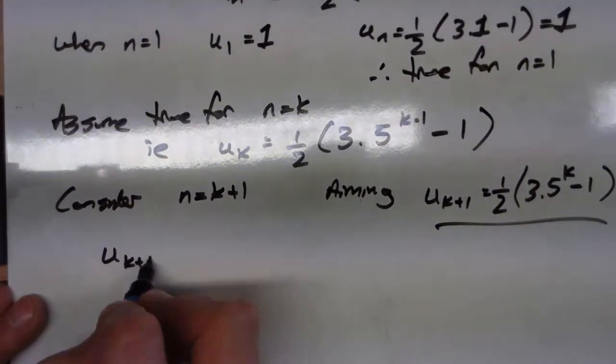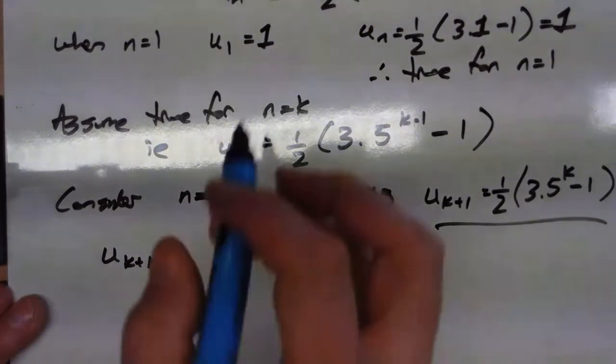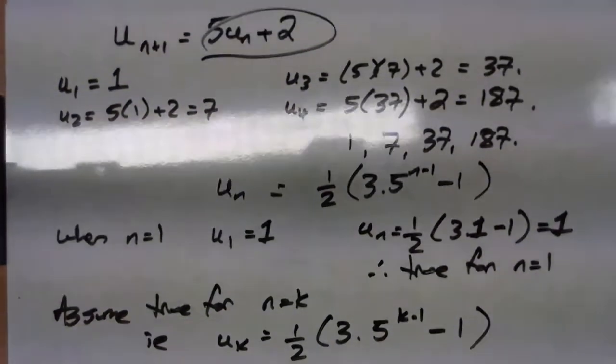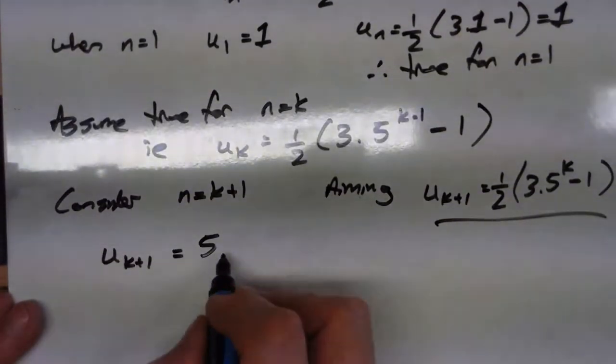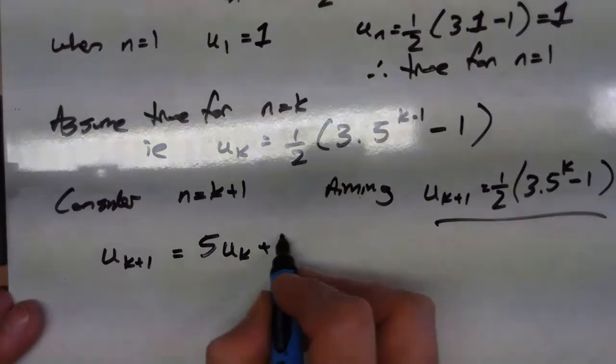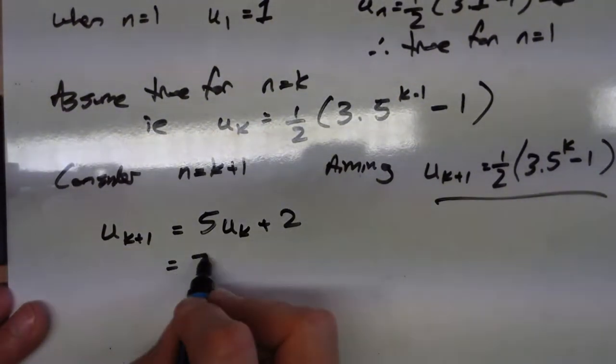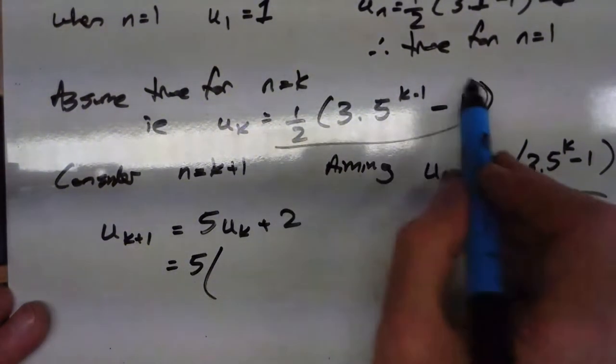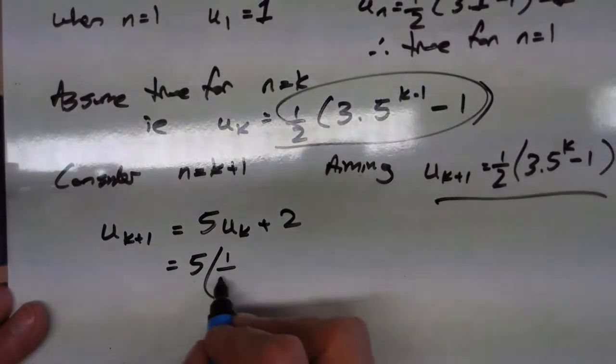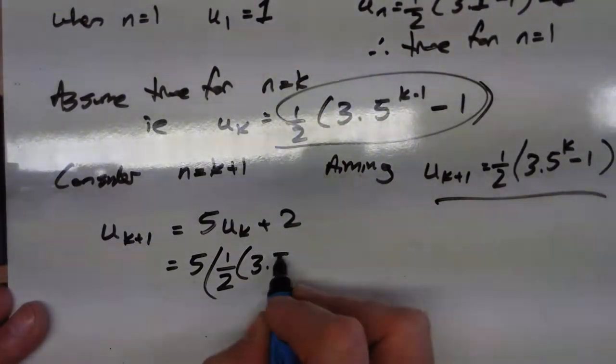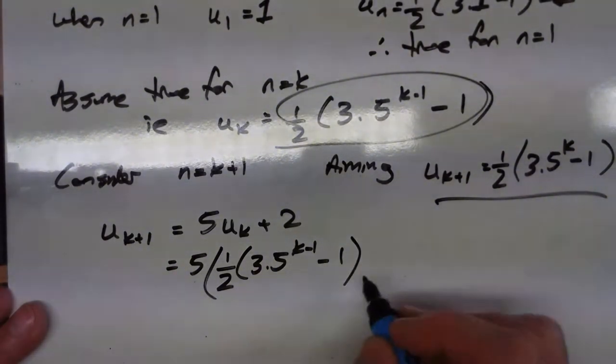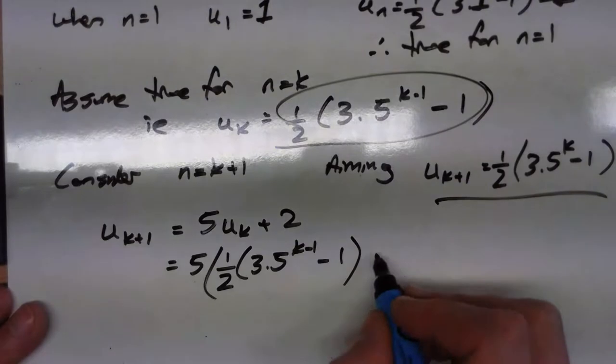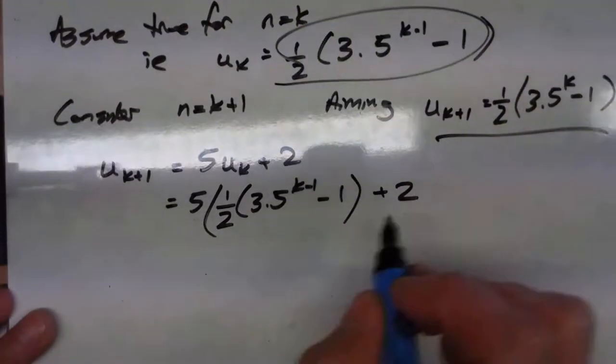u k plus 1 is equal to, the rule from the very beginning at the top there, is 5 lots of u k plus 2. Now we've assumed that this is true for u k, so we'll put that in there, 5 lots of a half, 3, 5 to the k minus 1, minus 1. And then I need to add the 2 on the end.